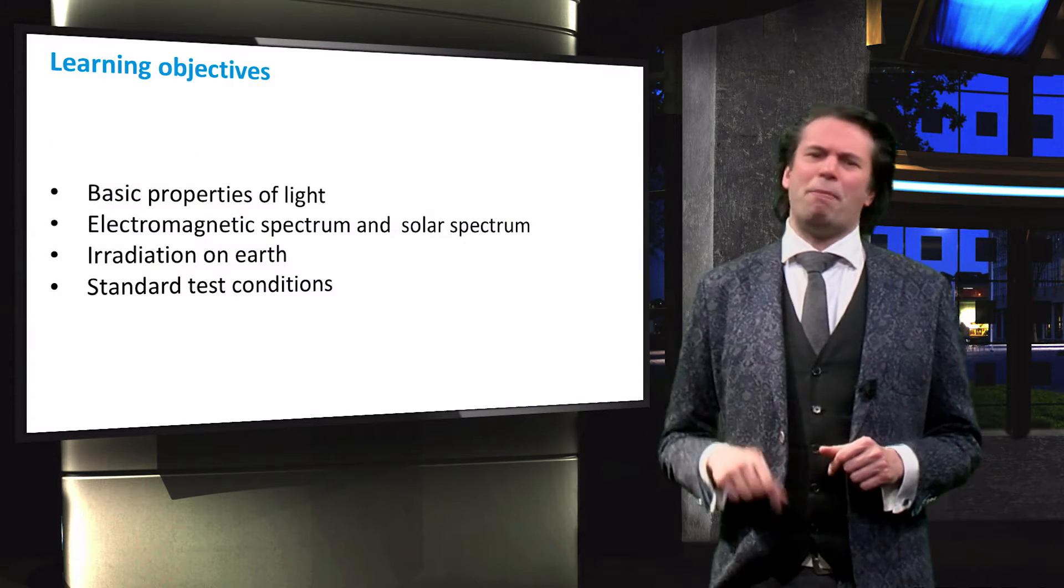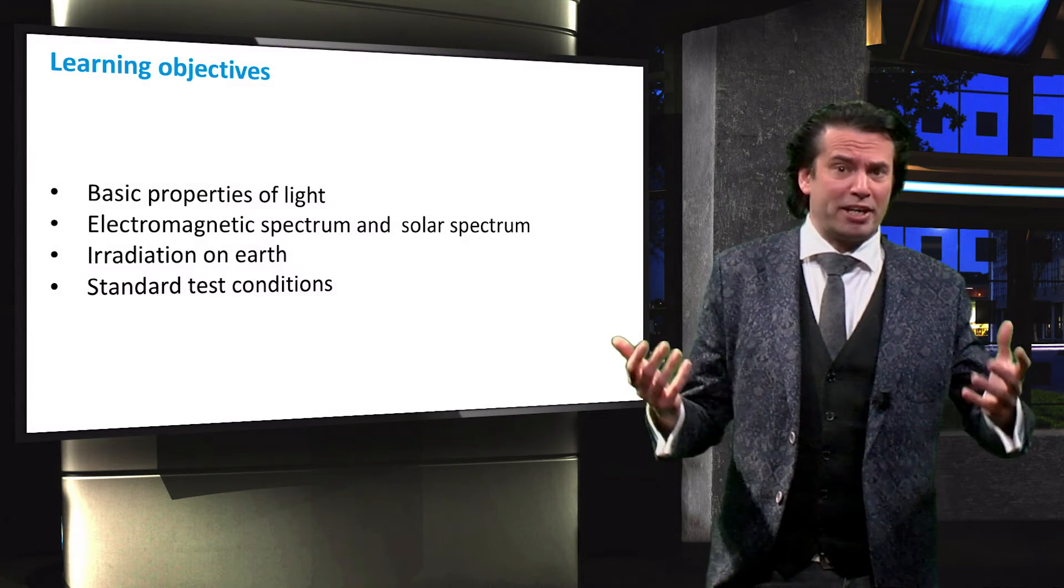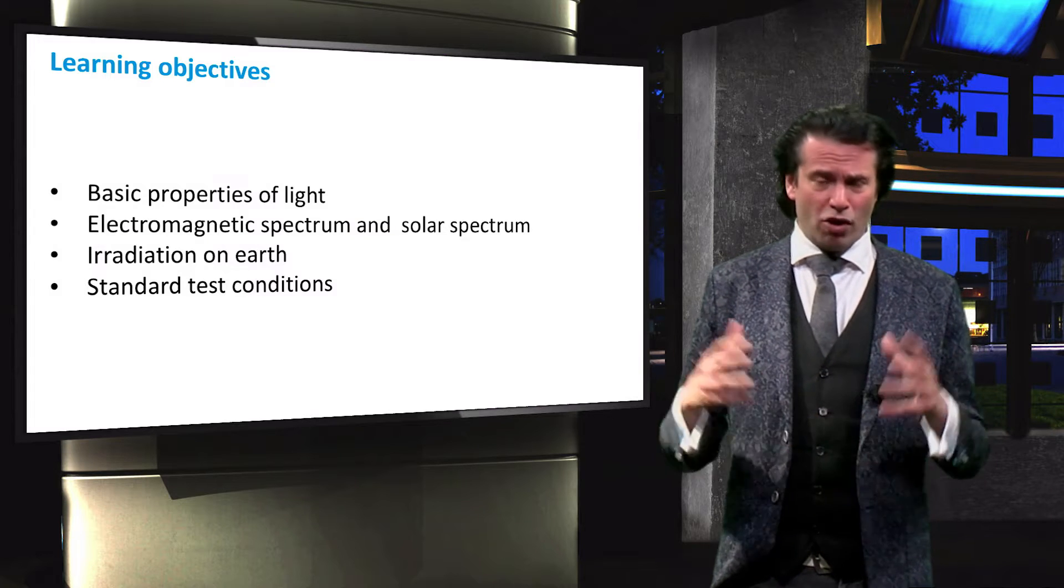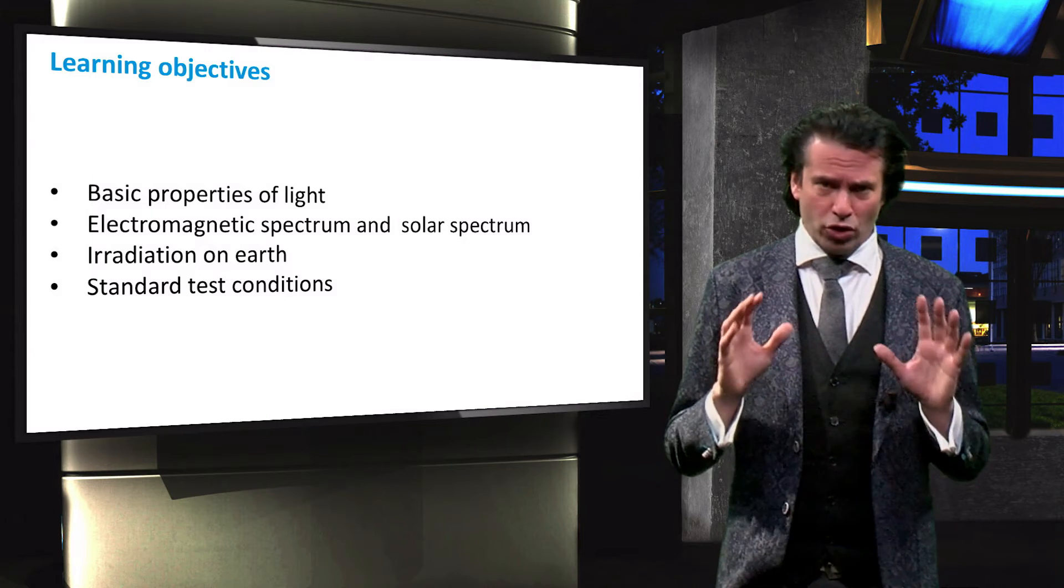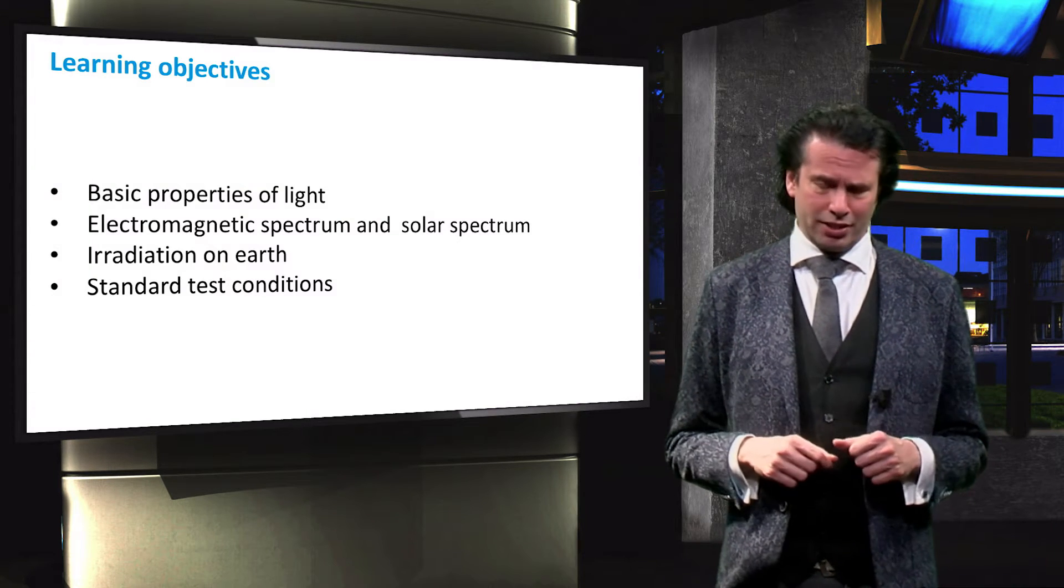We will learn about the basic properties of light, we will discuss the spectrum of electromagnetic radiation and the radiation spectrum of our sun. Then we consider the irradiation on the surface of the earth and finally we will discuss the standard test conditions.